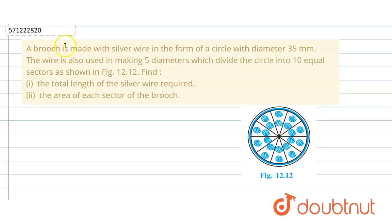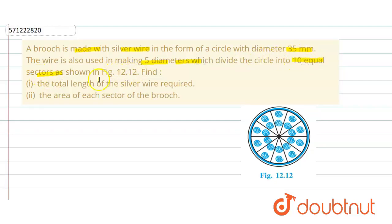In the given question, a broach is made with silver wire in the form of a circle with diameter 35 millimeters. The wire is also used in making five diameters which divide the circle into 10 equal sectors. We have to find the total length of the silver wire required and, in the second part, the area of each sector of the broach.